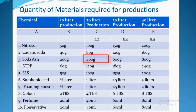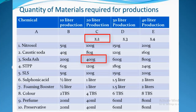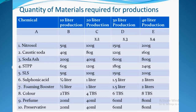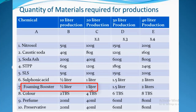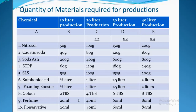Continuing with 20 liters: STPP — 60g × 2 = 120g. SLS — 50g × 2 = 100g. Sulfonic acid — half a liter × 2 = 1 liter. Foaming booster — half a liter × 2 = 1 liter. Color — 2 tablespoons × 2 = 4 tablespoons. Perfume — 20ml × 2 = 40ml. Preservative — 20ml × 2 = 40ml.